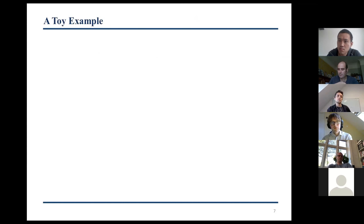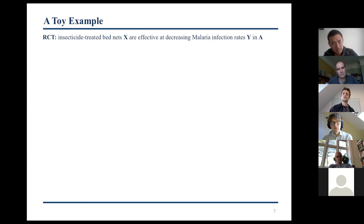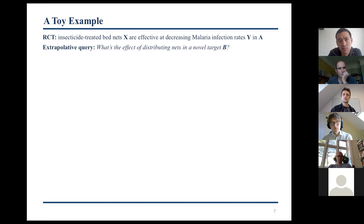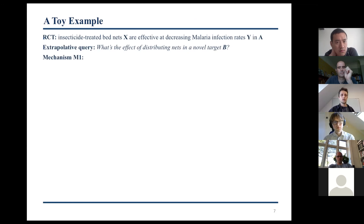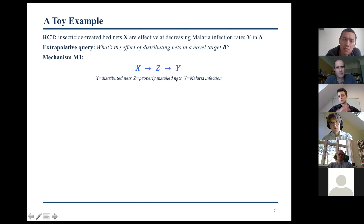Let me provide a toy example to illustrate how that could work — or not work — in practice. Assume we have evidence from an RCT indicating that distributing insecticide-treated bed nets, which I'll call X, is effective at decreasing malaria infection rates, called Y, in population A. Our extrapolative query is: what's the effect of distributing bed nets in a novel target B, a target that might differ in causally important ways? Assume we have knowledge of the mechanism in the experimental population: a single-path mediated mechanism from X over Z to Y. X is the number of distributed nets, Z is the number of properly installed nets, and Y is the malaria infection outcome.